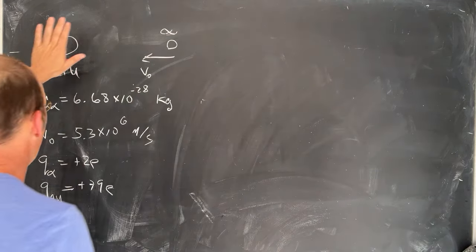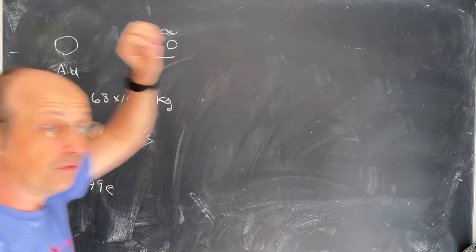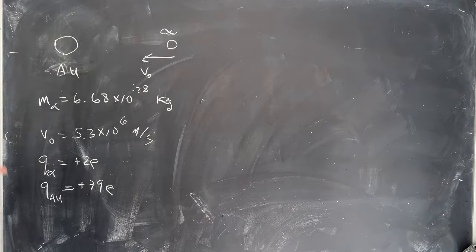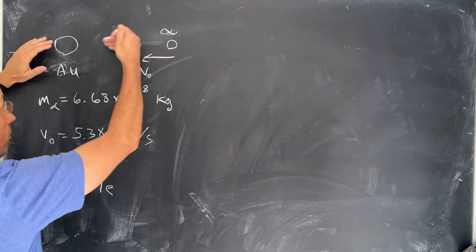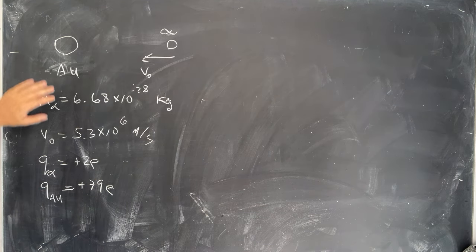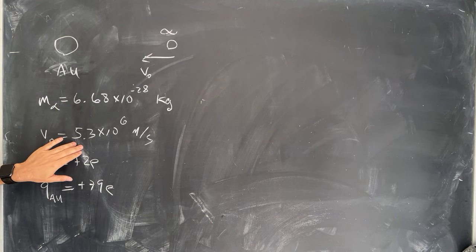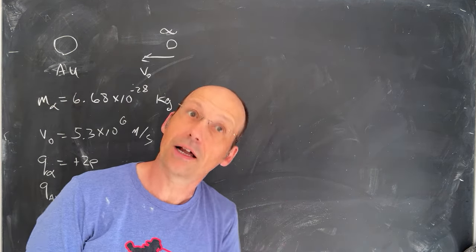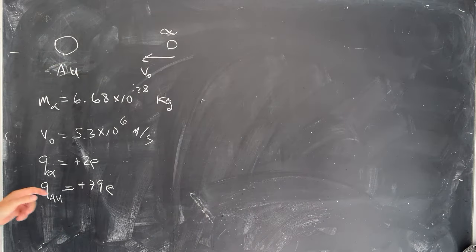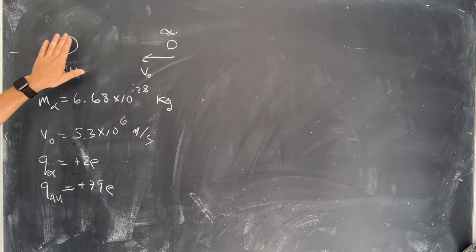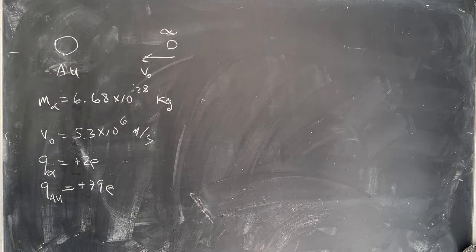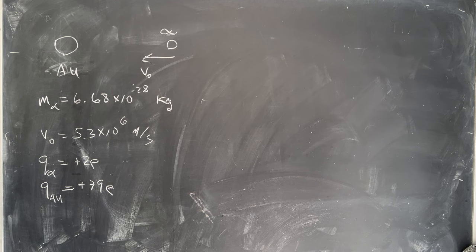Okay, so in this experiment we have the gold nucleus which we're going to assume is very heavy and does not recoil, and the alpha particle comes in and we want to know how close they get. So the mass of the alpha particle 6.68 times 10 to the negative 28 kilograms. The initial velocity 5.3 times 10 to the 6 which is super fast but not the speed of light so we don't have to worry about that. And then we have the charge of the gold is plus 79. The charge of the alpha is plus 2.